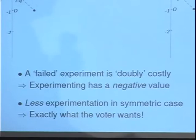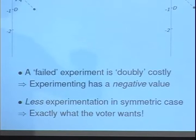Consequently, the Democrat is going to experiment less because of this negative value, but remember that's exactly what the voter wants — less experimentation. So even in this case where we have symmetric uncertainty and the known point gives the voter's ideal, the same result goes through.